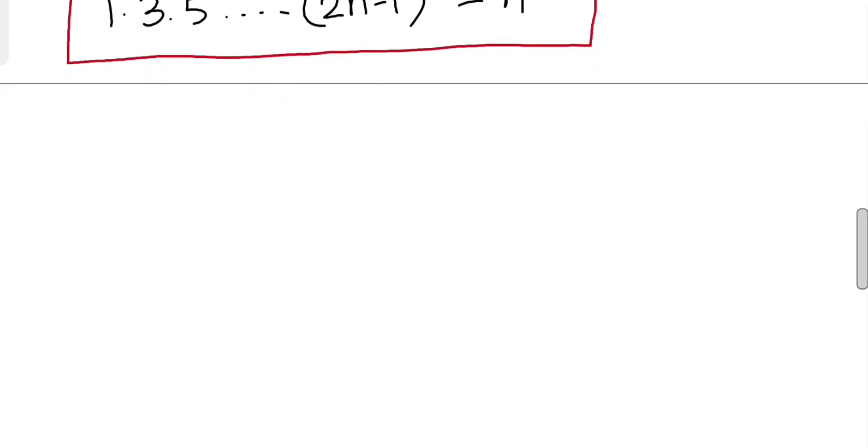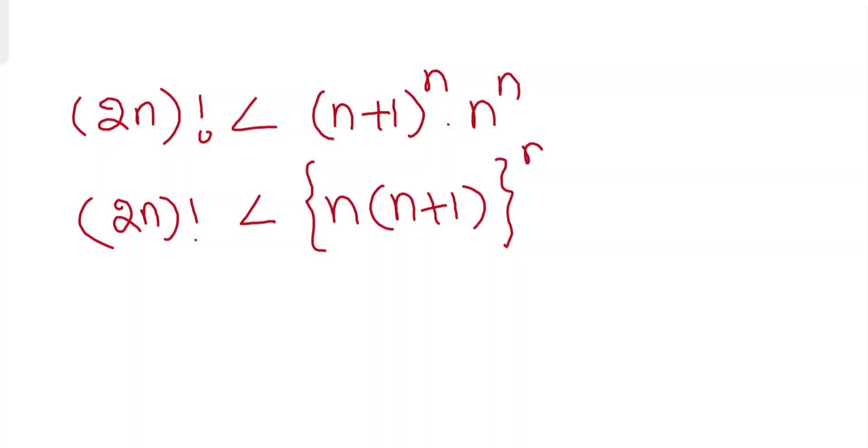If we combine both expressions, (2n)! will be less than (n+1)^n times n^n. So ultimately this will be equal to [n(n+1)]^n. Hence it is proved.